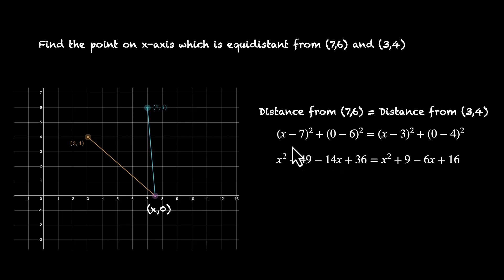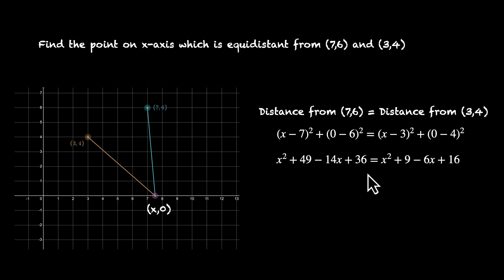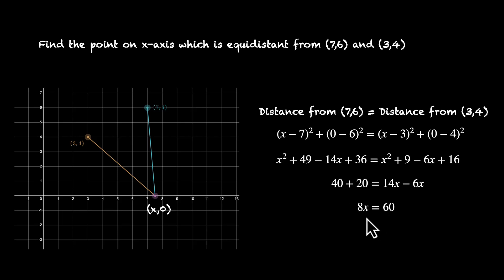Let's open the squares. (x−7)² = x² + 49 − 14x, and 6² = 36. (x−3)² = x² + 9 − 6x, and 4² = 16. We can cancel x² from both sides. Then 49 − 9 = 40 and 36 − 16 = 20, giving us 40 + 20 on one side. Moving terms: 14x − 6x = 8x, and 40 + 20 = 60. So 8x = 60, and dividing by 8, x = 7.5.